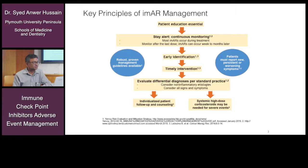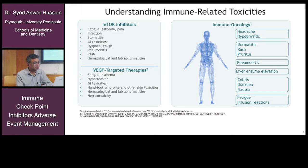Looking at the tolerability of cancer treatments — IO treatments, chemotherapy, and targeted therapies — we need to understand that these have different side effect profiles. It's important for all clinicians and the multidisciplinary team to get acquainted with these side effects. For immune checkpoint inhibitors specifically, examples include headaches, hypophysitis, and skin manifestations like dermatitis, rash, or pruritus.